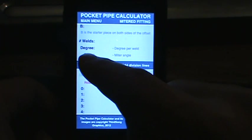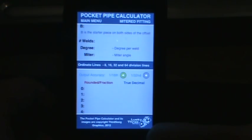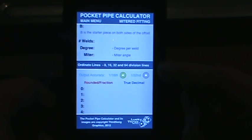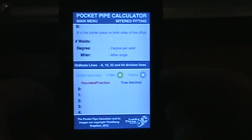The number of welds that you'll need, the degree of turn at each weld joint, and then it'll also tell you the miter that is required on each piece of pipe.